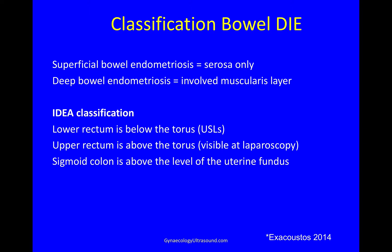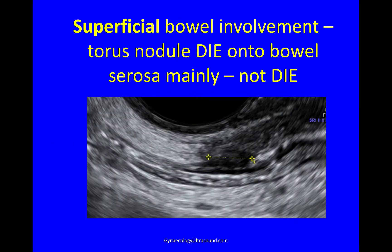The classification for bowel DIE is that superficial bowel endometriosis affecting the serosa only is not DIE. To have DIE you need to have an involved muscularis layer. The lower rectum is below the torus, the upper rectum is above the torus and is visible at laparoscopy, and the sigmoid is above the level of the uterine fundus. Here you can see the dark muscularis layer and a very superficial nodule of endometriosis that has not made the muscularis layer thick — so it's not DIE.